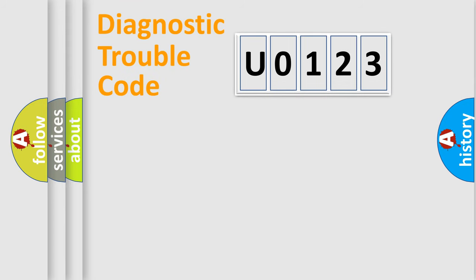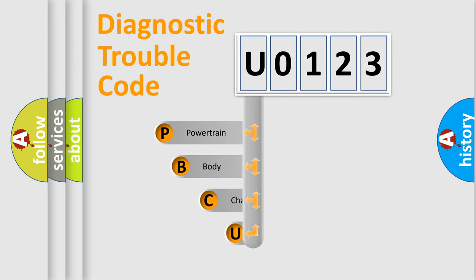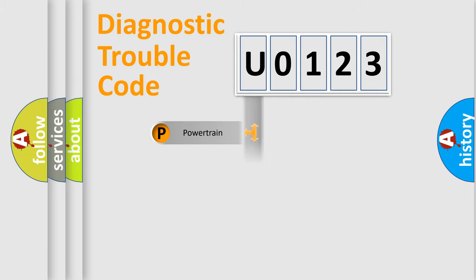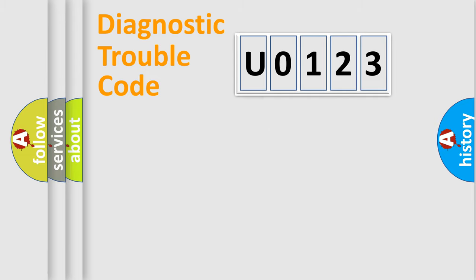Let's do this. First, let's look at the history of diagnostic fault code composition according to the OBD2 protocol, which is unified for all automakers since 2000. We divide the electric system of automobile into the four basic units: powertrain, body, chassis, network.